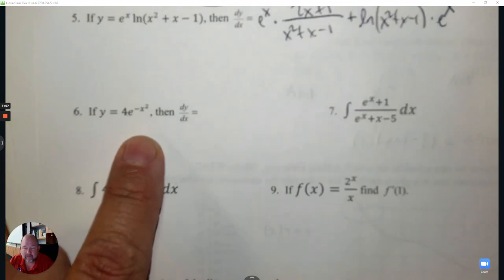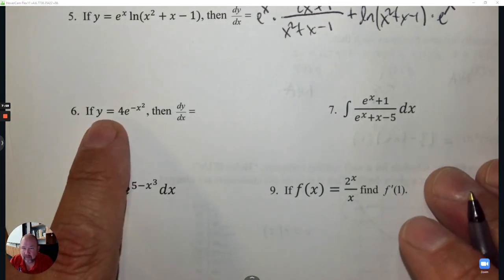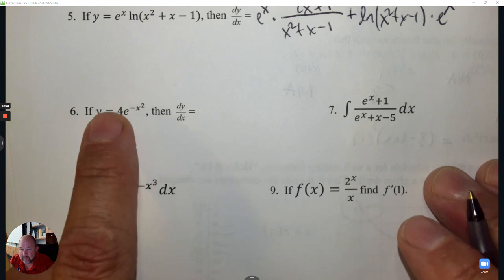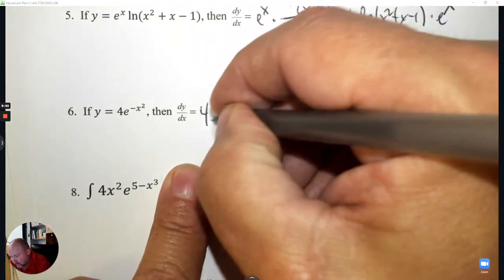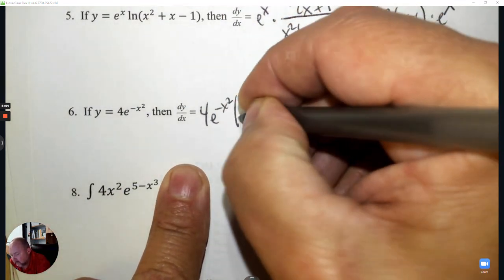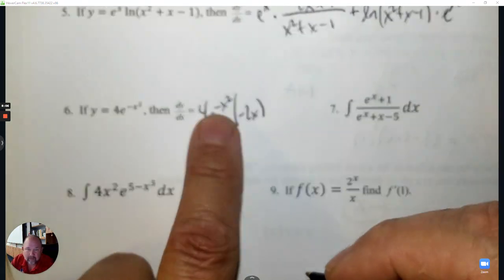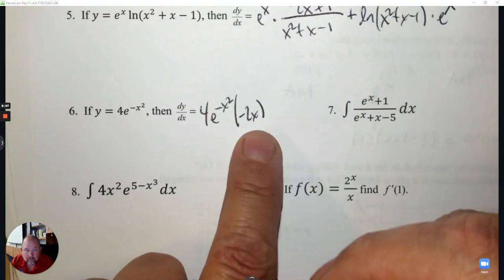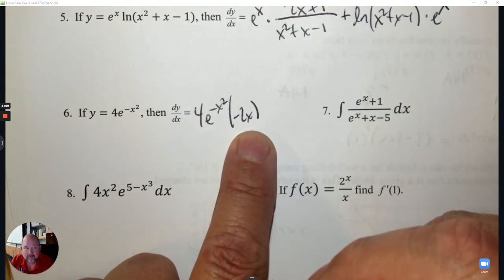Number 6 — again, you should do these questions first, then follow the video. What's the derivative here? Copy: 4e to the negative x squared. The hook is the exponent, and the derivative of negative x squared is negative 2x.